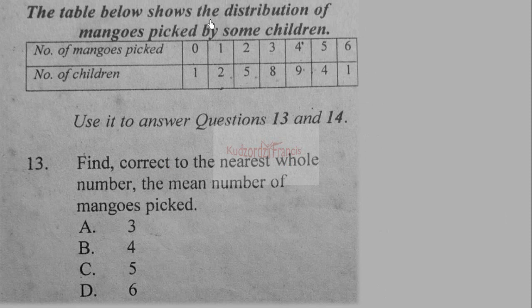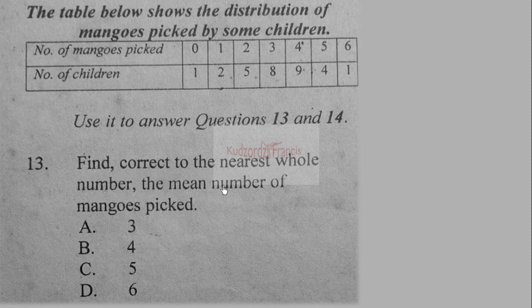The table shows the distribution of mangoes picked by some children. The number of mangoes picked are 0, 1, 2, 3, 4, 5, 6 and the corresponding number of children are 1, 2, 5, 8, 9, 4, 1. Question 13: find, correct to the nearest whole number, the mean number of mangoes picked.